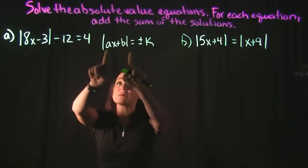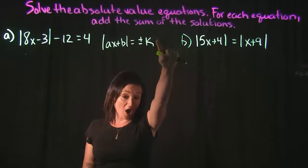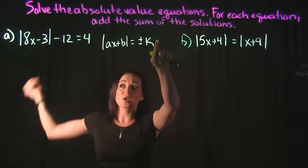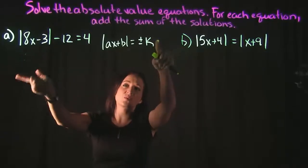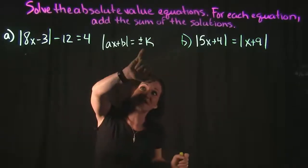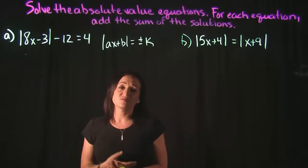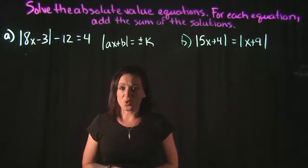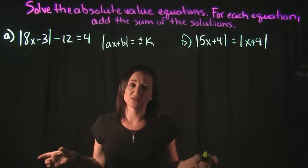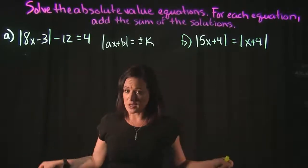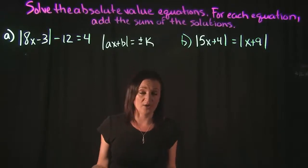We're going to take the absolute value on the left and set it equal to the positive constant, and then create a second equation where we take the absolute value on the left and set it equal to the negative constant. With absolute value equations, you're always going to end up splitting the equation into two separate equations and solving each one to get a solution.